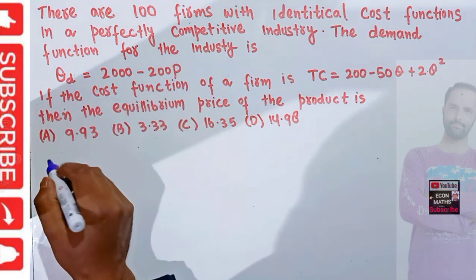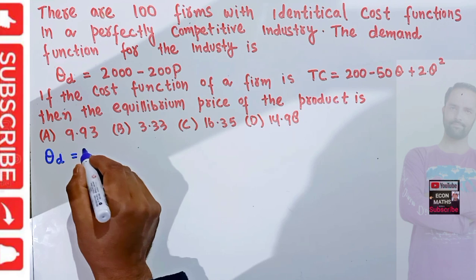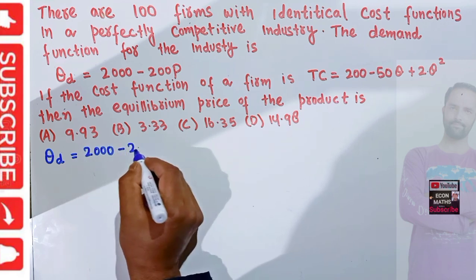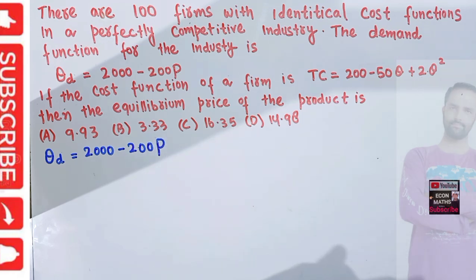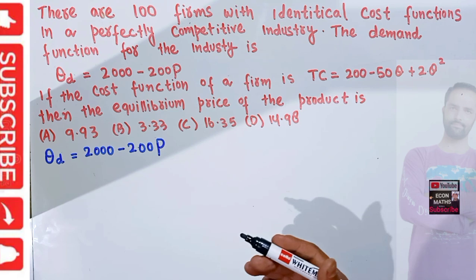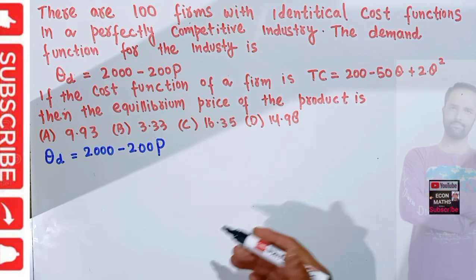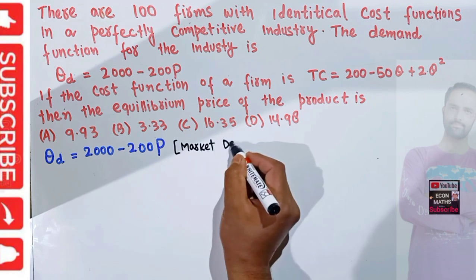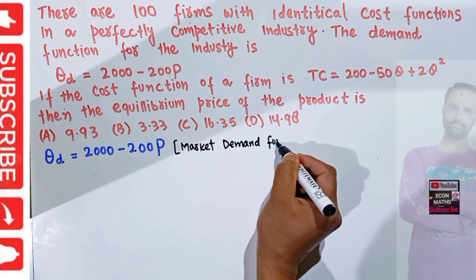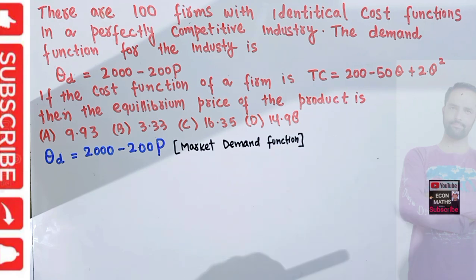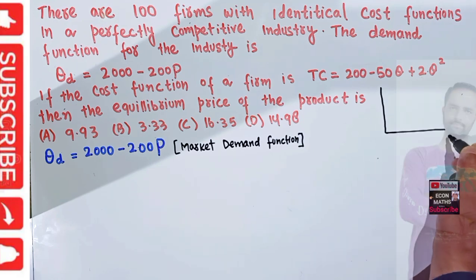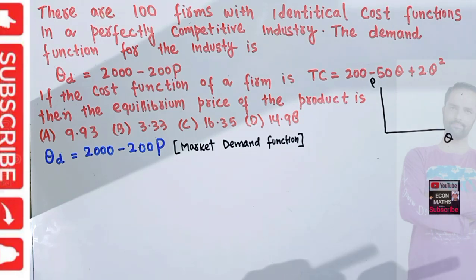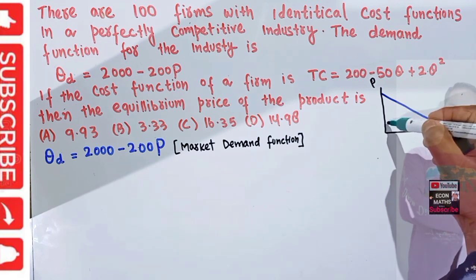We are given the market demand function: QD = 2000 − 200P. To find the equilibrium price, we also need to know the market supply function. Let me draw a small graph here — quantity on the horizontal axis, price on the vertical axis — to illustrate the market demand function.